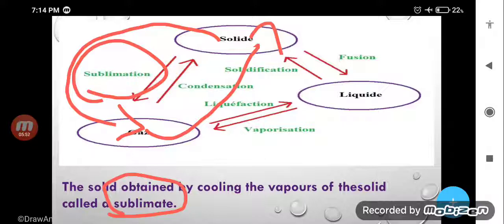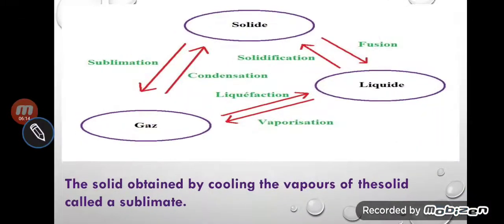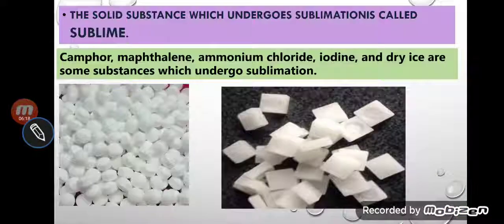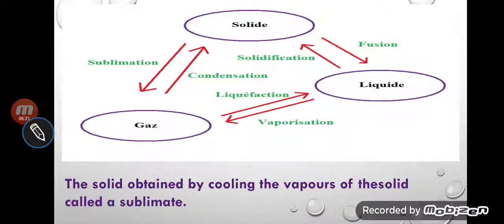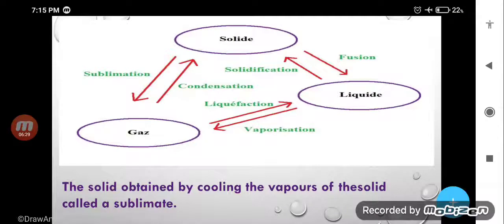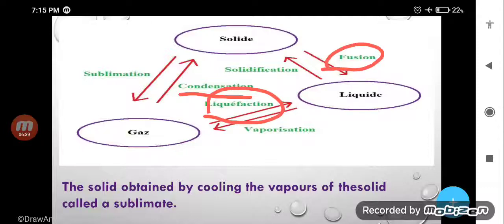Whatever solid form we get is called sublimate. Suppose camphor on heating changes into gas, and that gas when cooled down directly changes into solid camphor — that is called sublimate. So please be specific about what is sublimation, what is a sublimation substance, and what is sublimate. Here we have already discussed evaporation and liquefaction — we will talk about those later. Here we only need to talk about sublimation. Condensation we have already discussed, but liquefaction and fusion we will discuss in the next lecture.